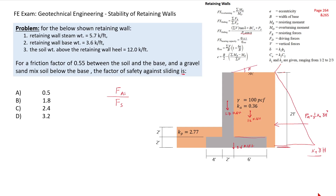We need the horizontal component. Since the soil is not sloping with an angle alpha, Pa is basically our Ph — the horizontal force component of the active force. The forces against sliding equal the summation of vertical forces multiplied by tan(δ), where tan(δ) is the friction factor of 0.55, plus b·ca. Since we have a gravel-sand mixed soil, cohesion equals zero, so this term goes to zero.